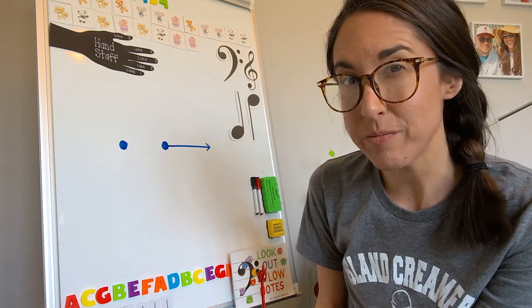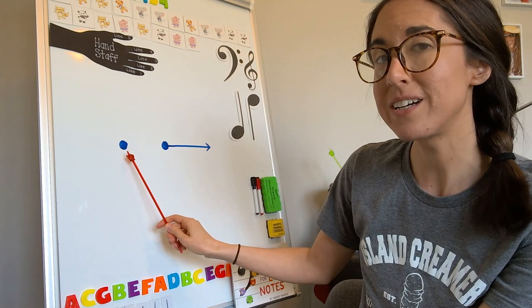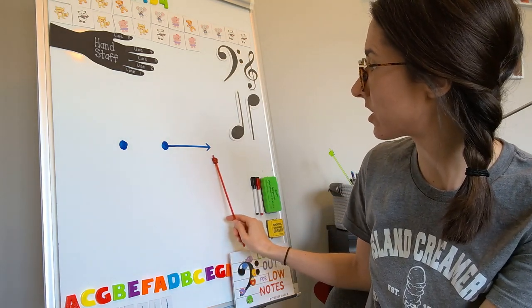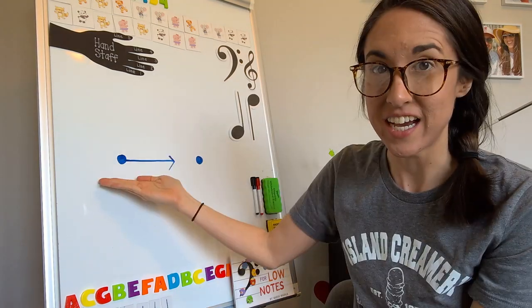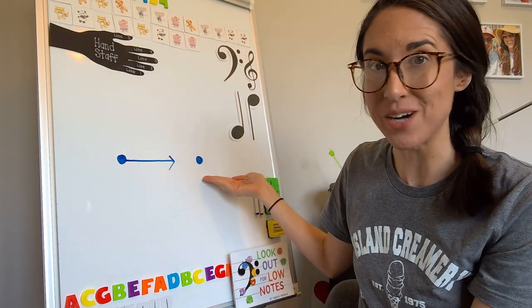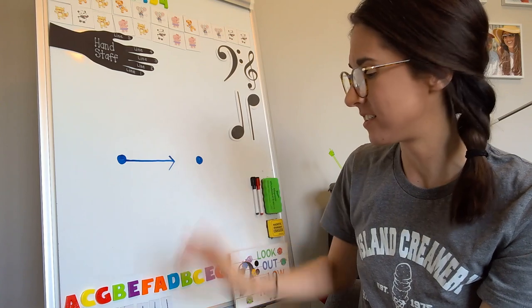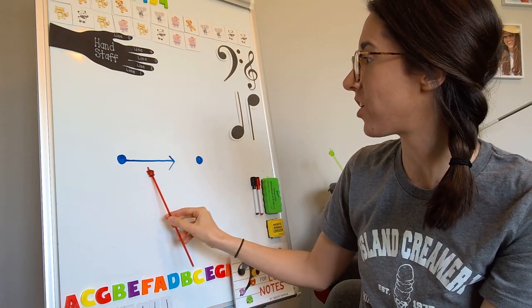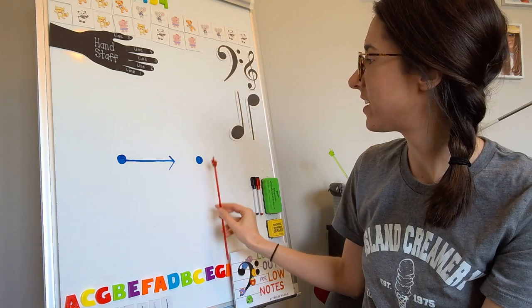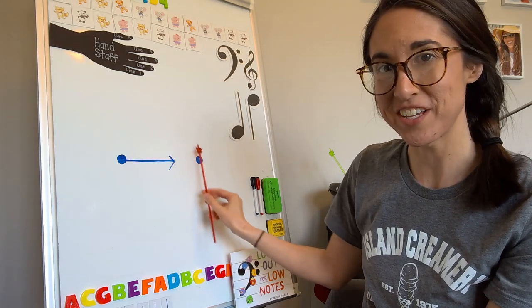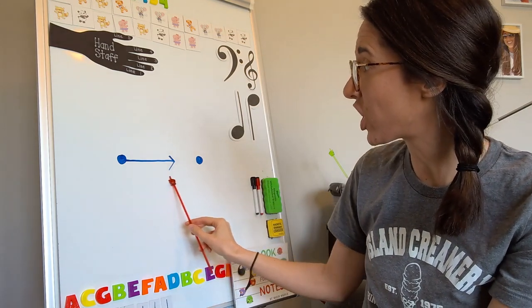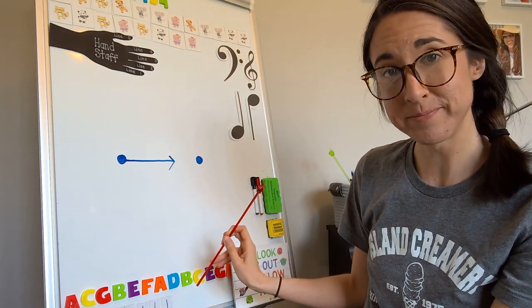If we put both sounds together it goes like this: short, long. Can you say that with me? Here we go: short, long, long. Let's try a new one. How would we say these sounds? First we would say long, long, short, short. Try it with me. Here we go: long, short.